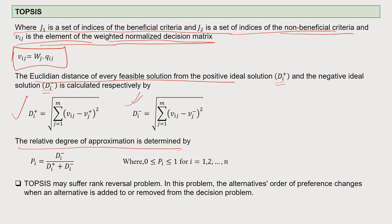The relative degree of approximation in TOPSIS is determined by the formula: P_i equals D_i-minus divided by (D_i-plus plus D_i-minus), where D_i-minus is the negative ideal solution distance and D_i-plus is the positive ideal solution distance. P_i values range between 0 and 1, for i equals 1 to n. TOPSIS may sometimes suffer from a rank reversal problem — where a higher rank is given to a lower-value alternative.